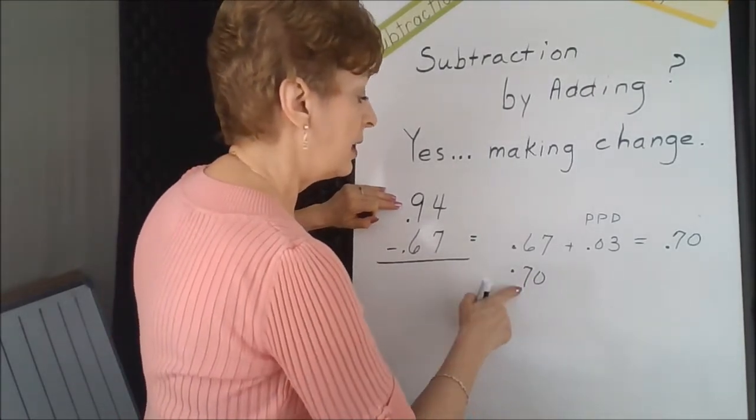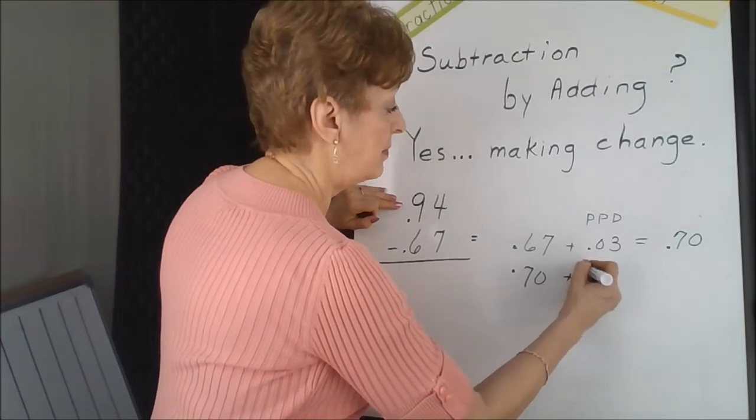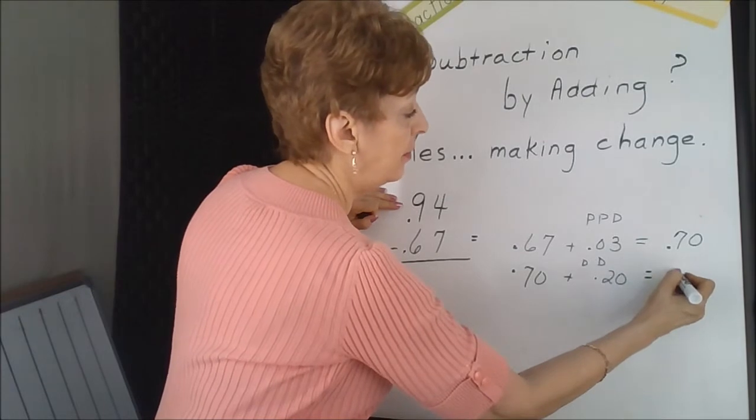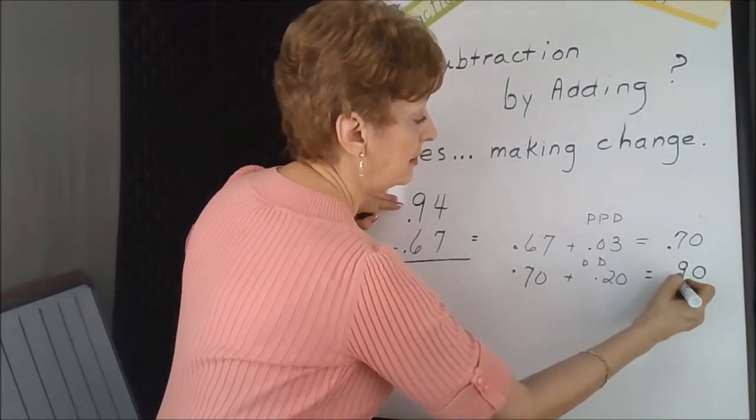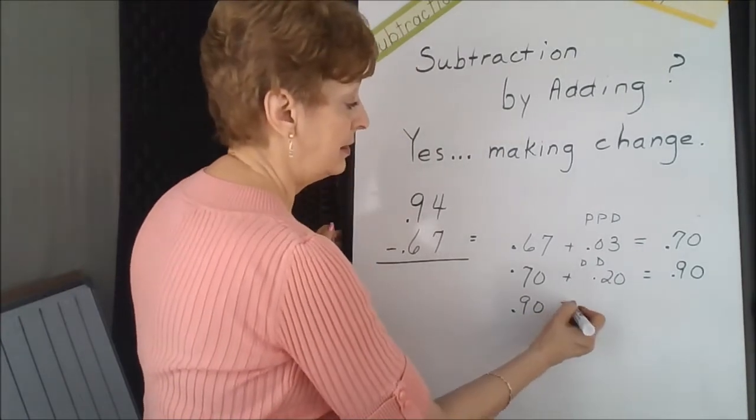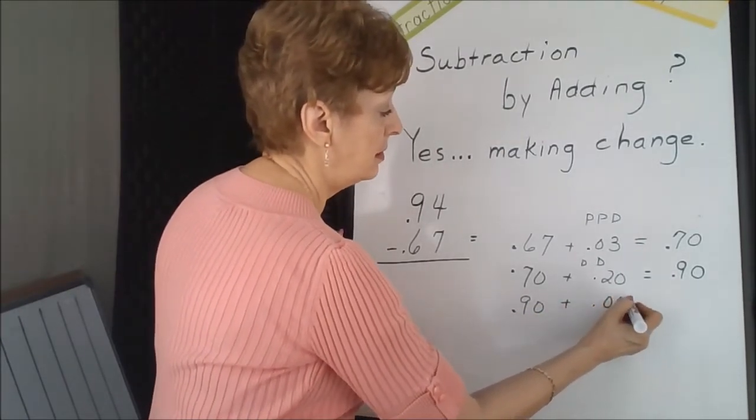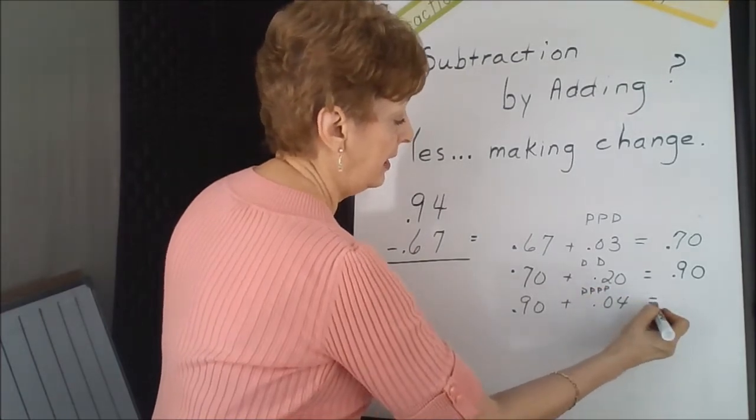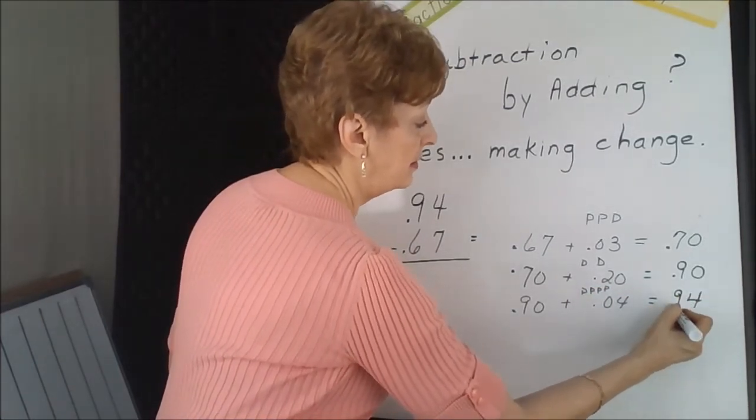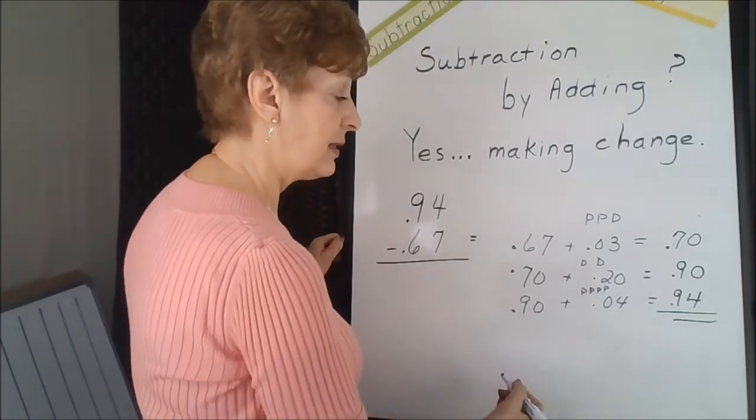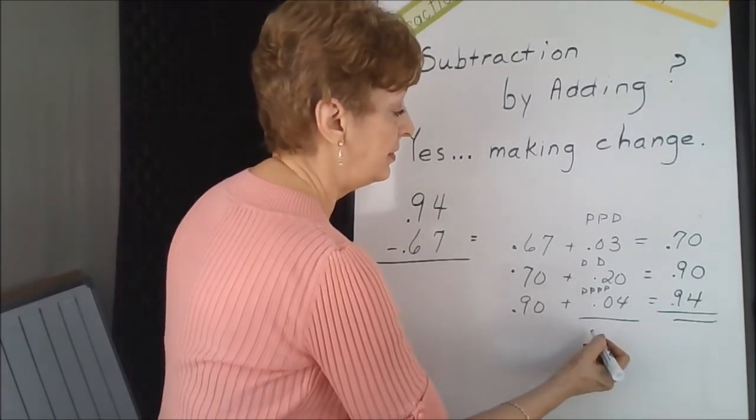Now, if I add two dimes to this, I would get 20 cents, and that would give me 90 cents. Now it's so easy to add four more pennies and get 94 cents.